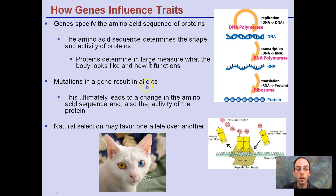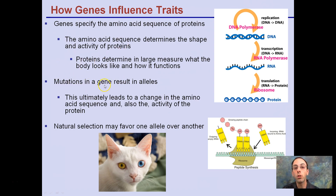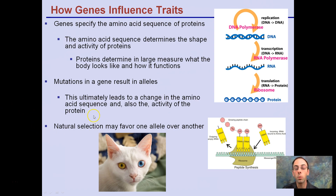Mutations in a gene result in alleles, and this ultimately leads to a change in the amino acid sequence and also the activity of the protein. Natural selection may favor one allele over another. It's important to remember a mutation does not necessarily automatically mean a bad thing — mutation simply means there's been a change in the gene. Whether it's a good or bad change will result from the environment or the natural selection that occurs.